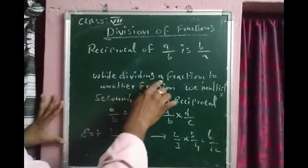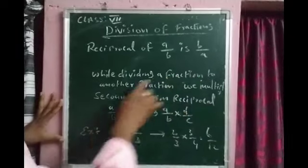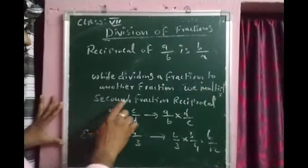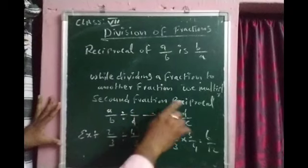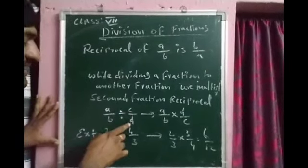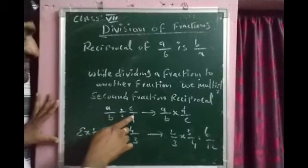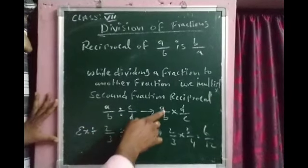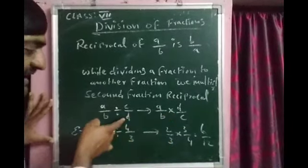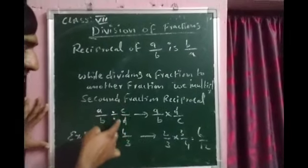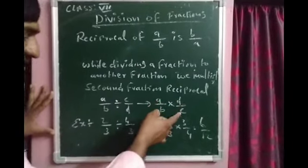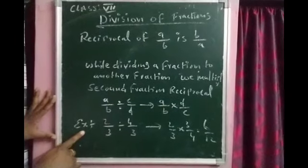While dividing one fraction by another, we multiply by the reciprocal of the second fraction. So, a by b divided by c by d becomes a by b multiplied by the reciprocal of c by d, which is d by c.